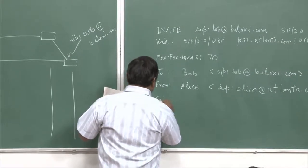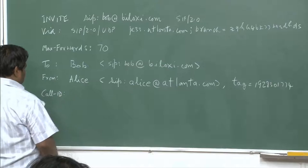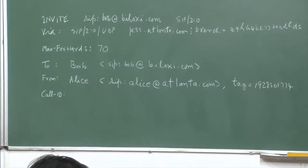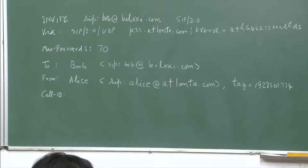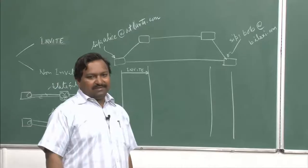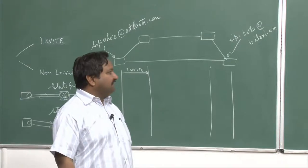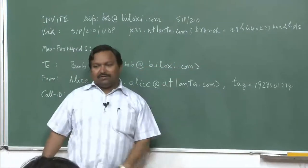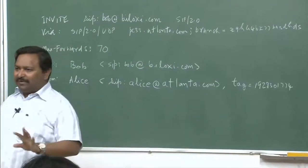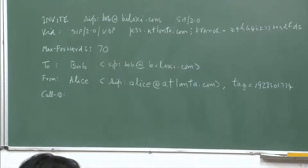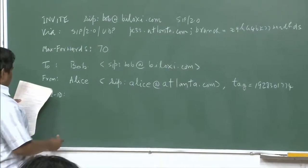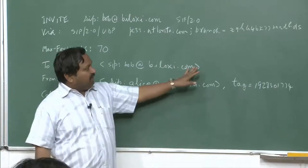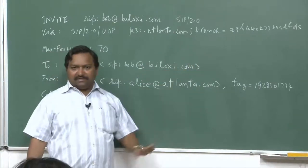Then you will have the Call-ID. This is usually a random number combined with the machine IP address being used. Since we have a DNS name already assigned to the source — pc33.attenta.com — if it is not there, you simply use an IP address in dotted decimal notation. There is no need to always use domain names; you can use IP addresses, and that is permitted. The Call-ID is usually some random number generated by the machine.